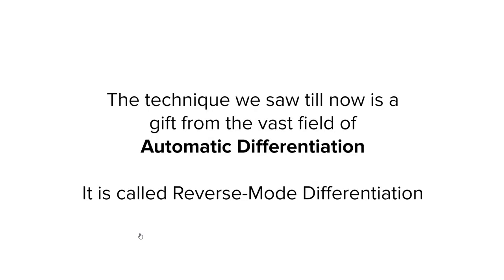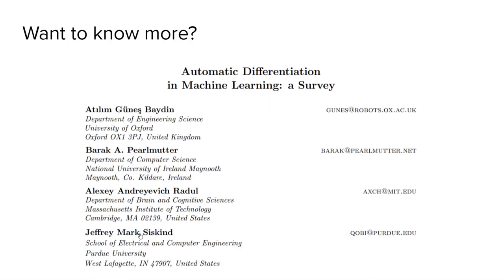The method we saw for backpropagation is just a very small part of what is a very large field of automatic differentiation. The technique we saw is called reverse mode differentiation. If you want to know more about automatic differentiation and how it is used in machine learning, I would highly recommend reading this survey paper. On this note, let's end this lecture. Thank you.